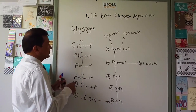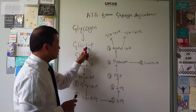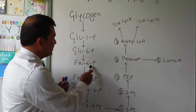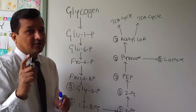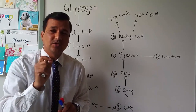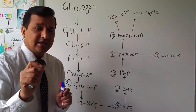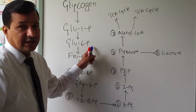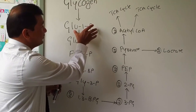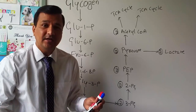During glycogen degradation in skeletal muscle, glycogen is broken down into glucose-1-phosphate by glycogen phosphorylase. Glucose-1-phosphate is then converted to glucose-6-phosphate, and glucose-6-phosphate is converted into fructose-6-phosphate. This is because glucose-6-phosphatase enzyme is absent in skeletal muscle and other tissues — it is only present in the liver, which is why only the liver can release free glucose from glycogen.